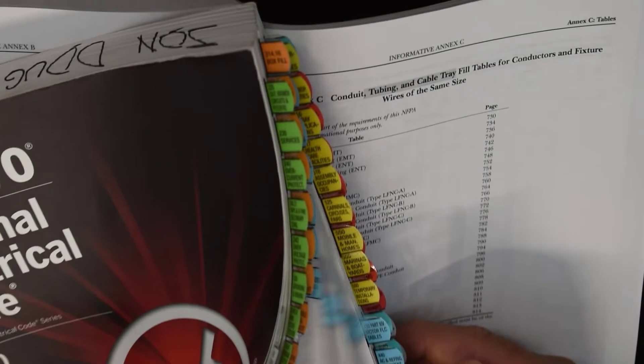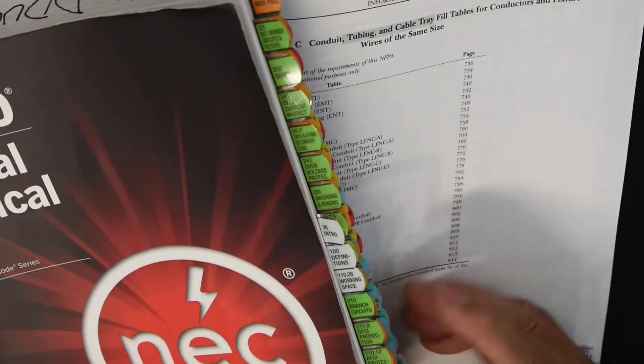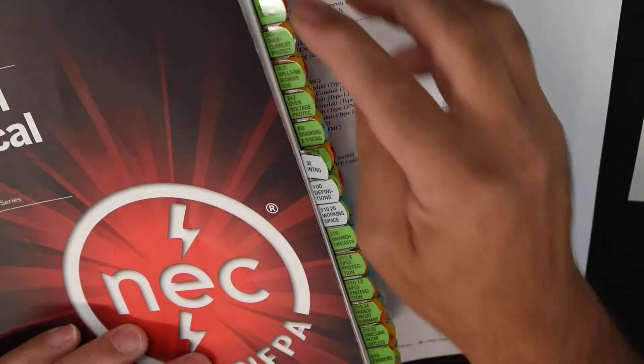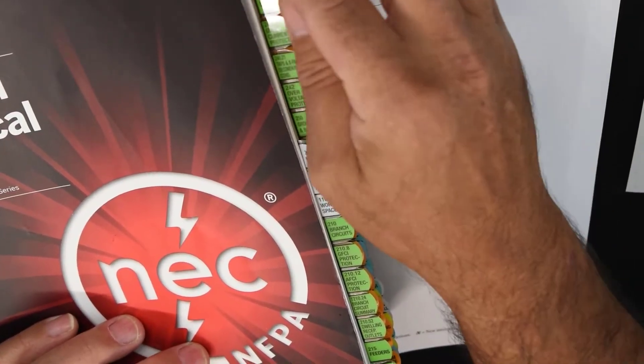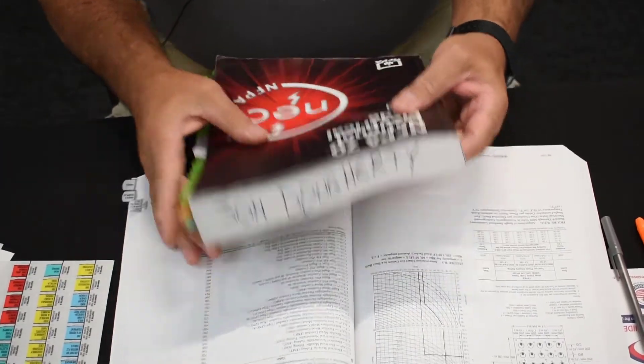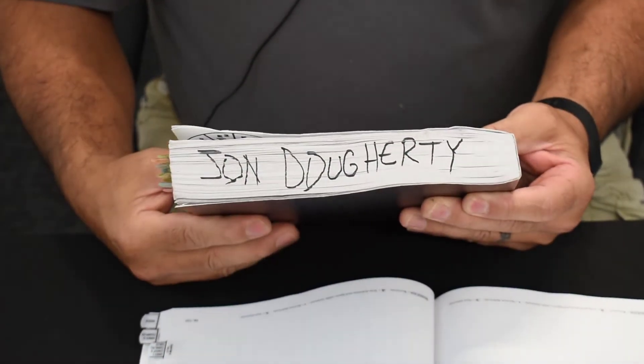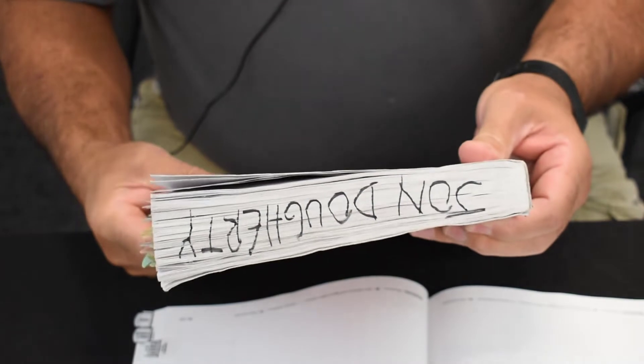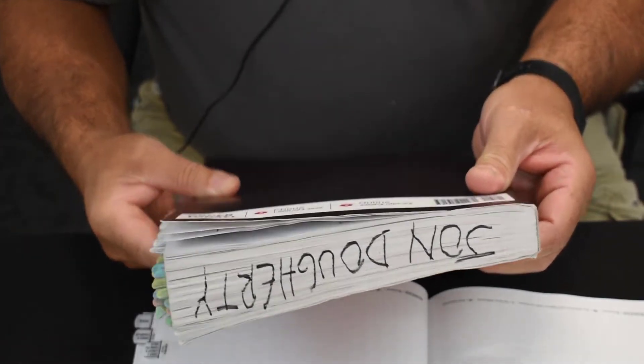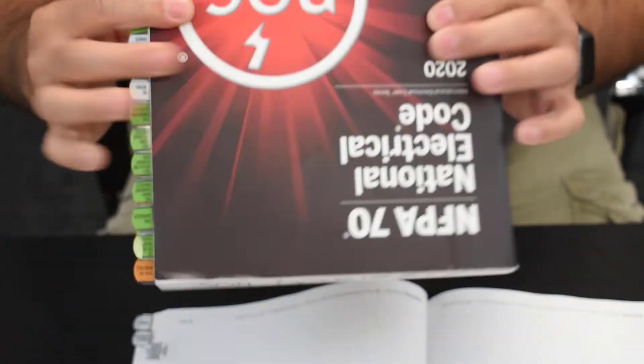When you're done, it will look like this and all these nice color tabs will help you identify where in the code you're going to go. Once you get it all tabbed up, definitely suggest that you put your name across the edge on the outside.